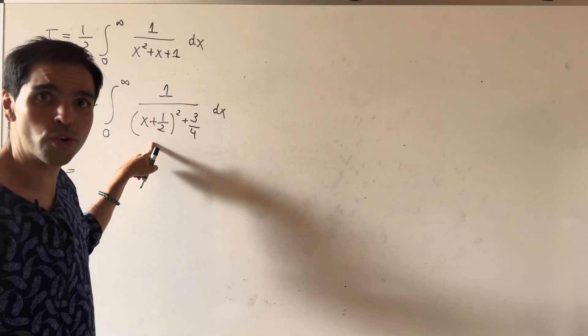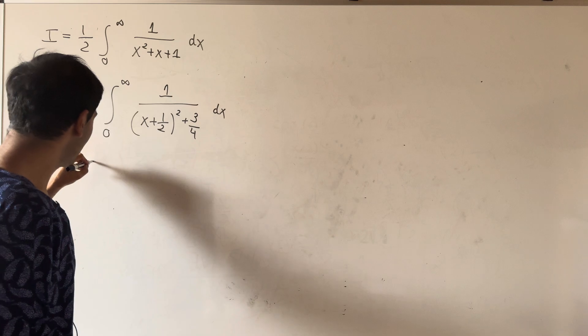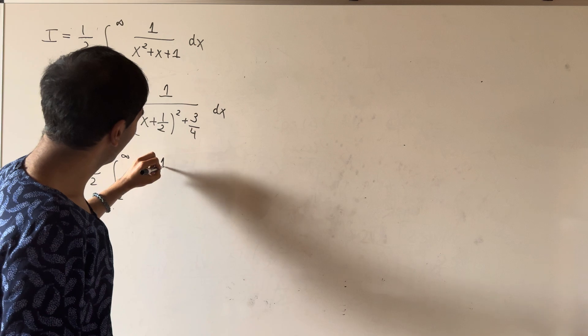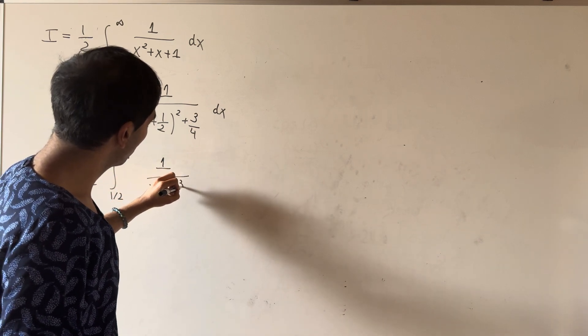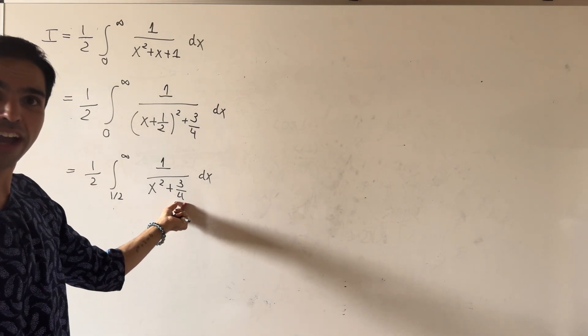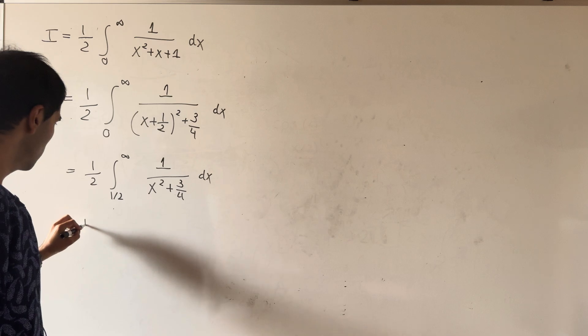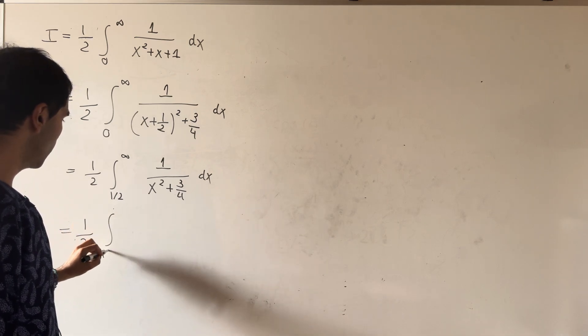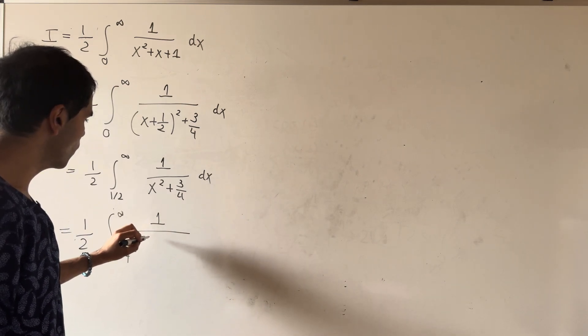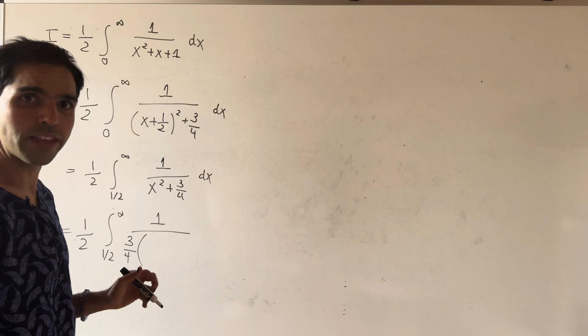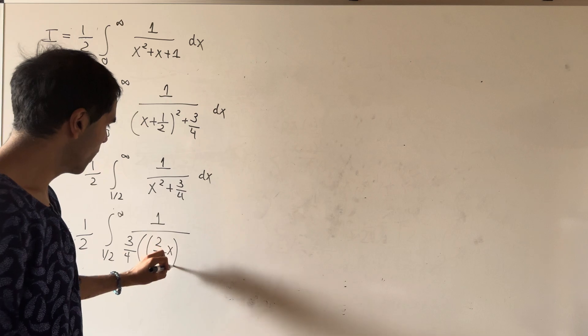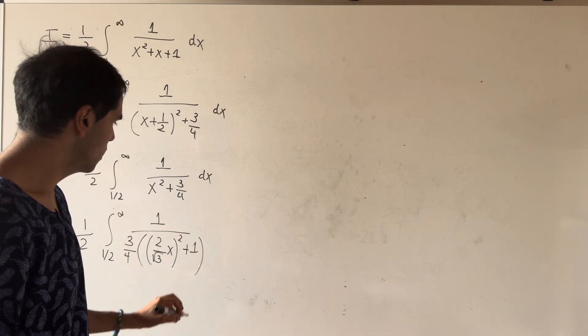We can do a quick u-sub. u equals x plus 1 half, and then we get 1 half integral from 1 half to infinity of 1 over u squared plus 3 quarters du. Then you can factor out these 3 quarters. So this becomes 1 half integral from 1 half to infinity of 1 over 3 quarters, and then 4 thirds u squared, which becomes 2 over square root of 3 u squared plus 1 du.